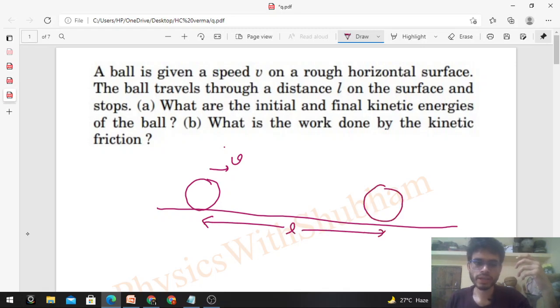The initial kinetic energy is half of M into V square and the final kinetic energy is 0 because the speed is 0. Part B.